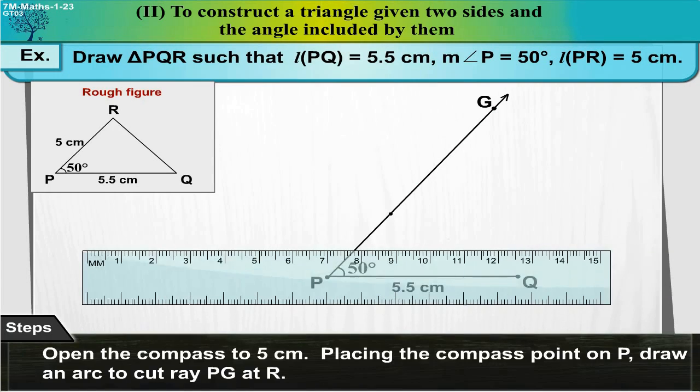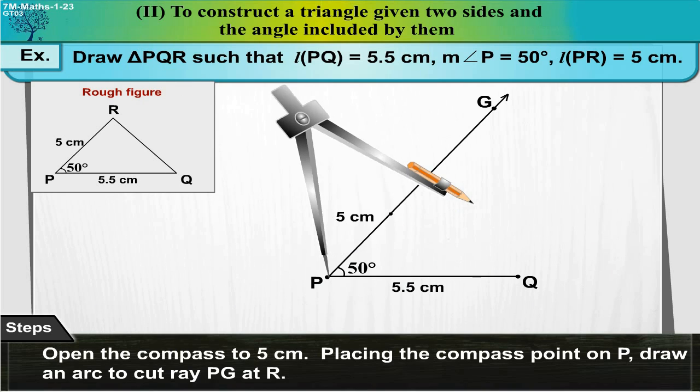Now open the compass to 5 cm. Placing the compass point on P, draw an arc to cut ray PG at R.